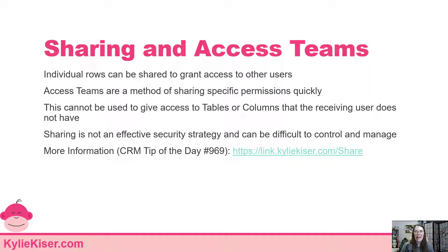I want to talk about sharing and access teams. Individual users have access to share particular rows with other users. Maybe I have two salespeople in different business units who want to work together on an account — they could share that account and both have access. This can be useful, but it can quickly become a problem if it becomes the basis for your security. Any sharing records go into what's called a Principal Object Access table, or POA table.